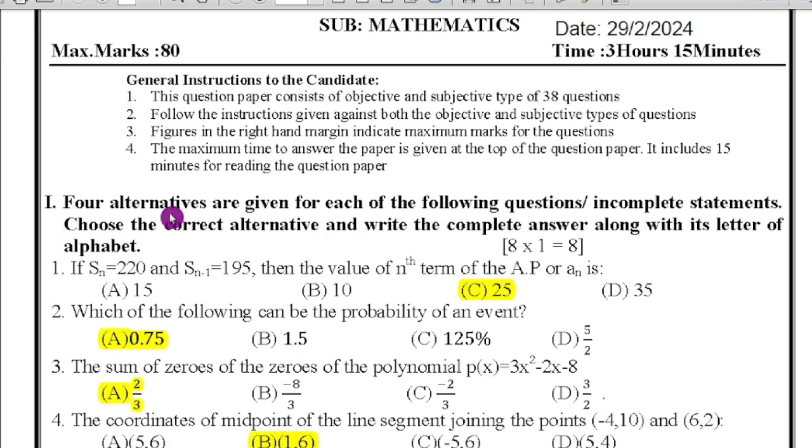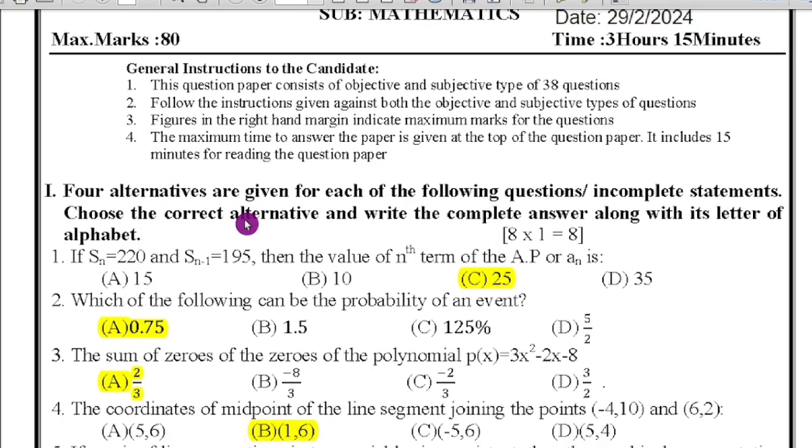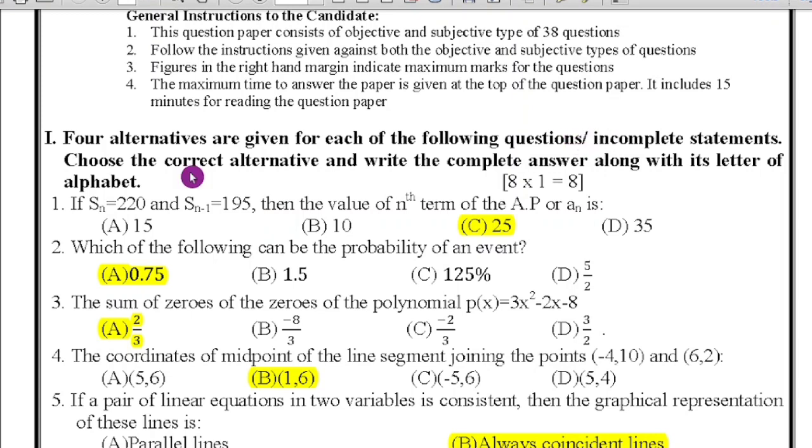First, four alternatives are given for each of the following statements or questions. Choose the correct alternative and write the complete answer along with its letter of alphabet. Eight questions will be there, each question carries one mark.